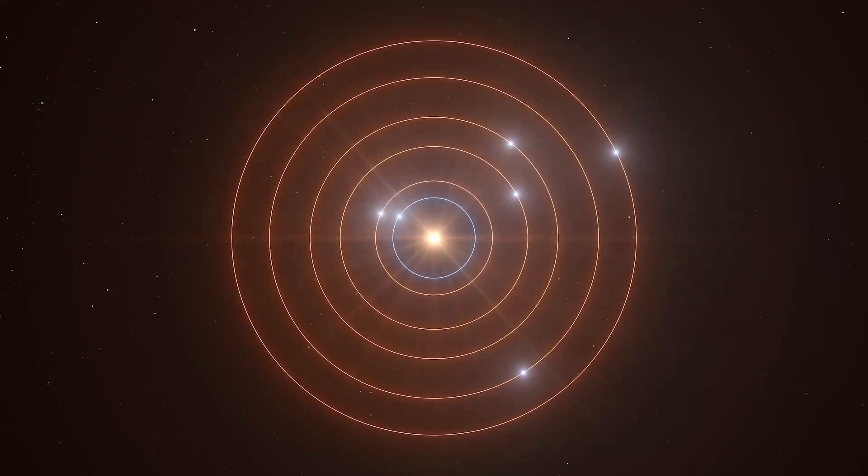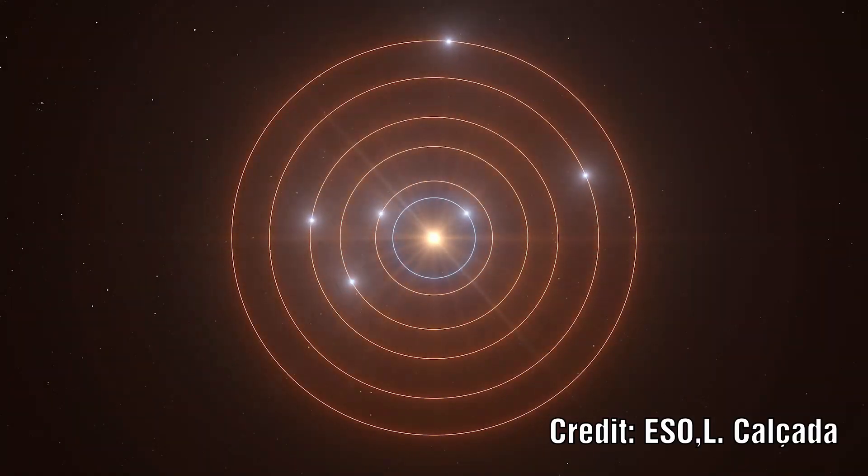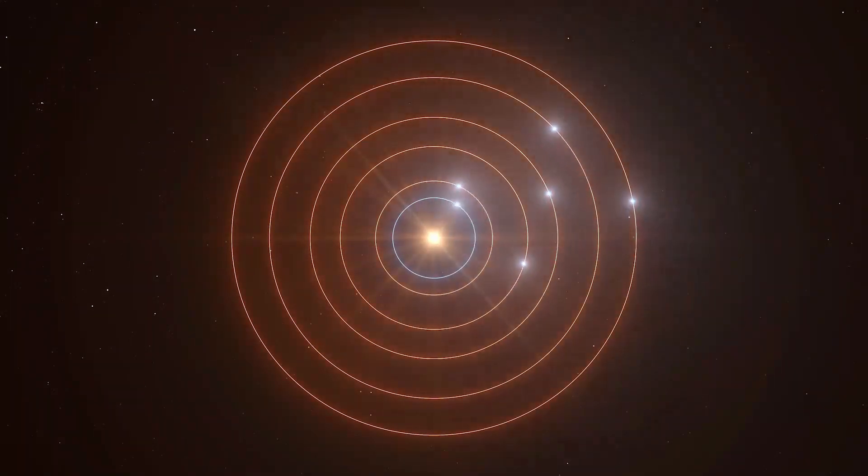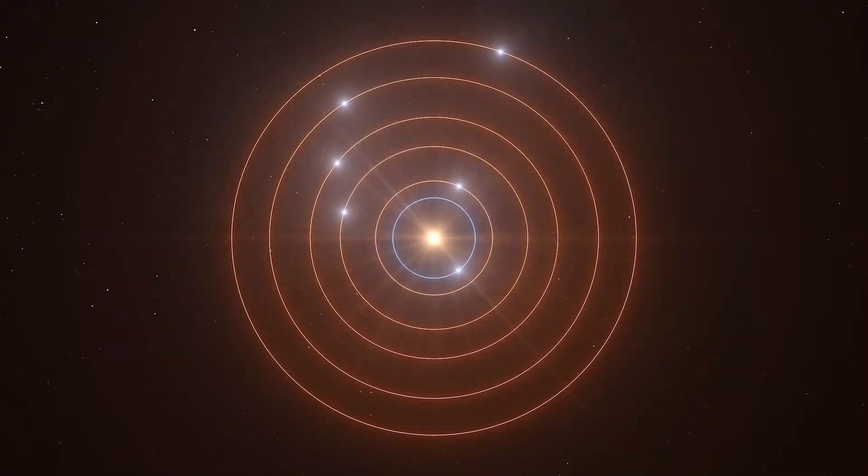When they started to examine the details of the orbits they discovered something rather strange. The five outer planets are locked into a precise resonance chain. This means that they regularly align after the completion of an exact number of orbits. Starting from the star the resonance chain is what they call 18, 9, 6, 4, 3. Every three orbits of the outer planets the next one in has completed four, the next six, then nine and the one closer to the star 18.